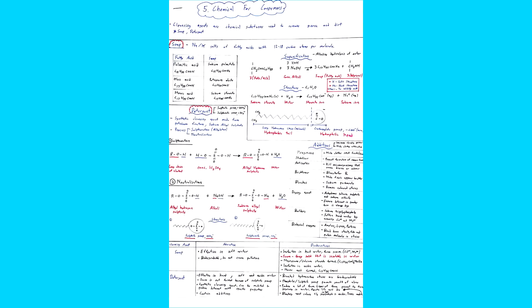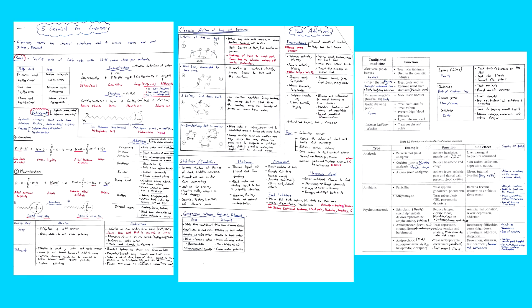And the last topic of SPM chemistry syllabus, chemical for consumers. Again, just like form 4 chapter 9, I don't really have much to explain in this chapter as it's pretty much full of memorizing. So I have made the simplified notes for this chapter. It's three pages long. If you're aiming for A+, try to memorize everything.